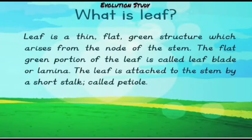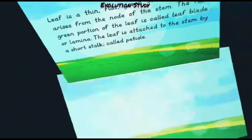The flat green portion of the leaf is called the leaf blade or the lamina. The leaf is attached to the stem by a short stalk called the petiole.